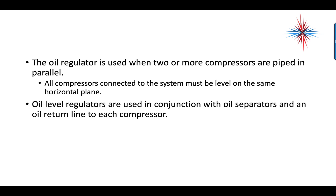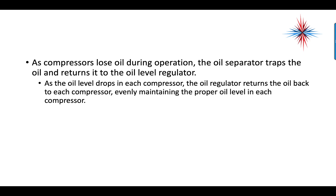The oil regulator is used when two or more compressors are piped in parallel. All compressors connected to the system must be on the same horizontal plane — they have to be level. Oil level regulators are used in conjunction with oil separators and an oil return line to each system. As compressors lose oil during operation, the oil separator traps the oil and returns it to the oil level regulator, which then returns oil back to each compressor evenly, maintaining the proper oil level in each compressor.